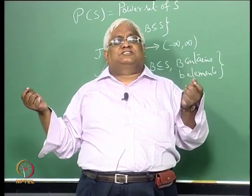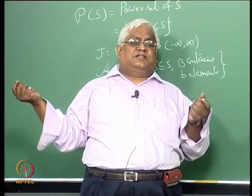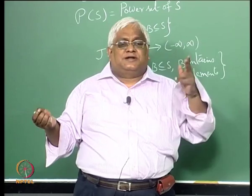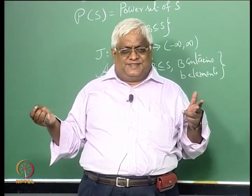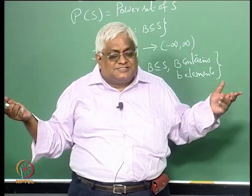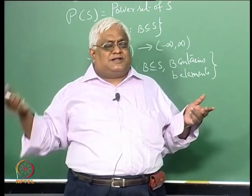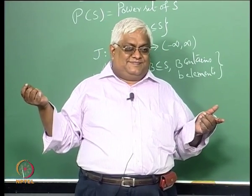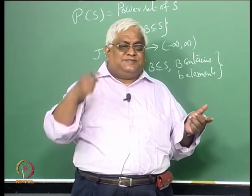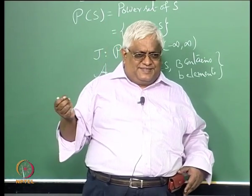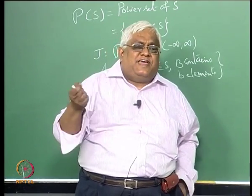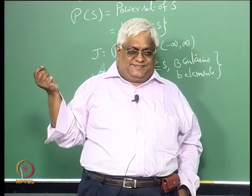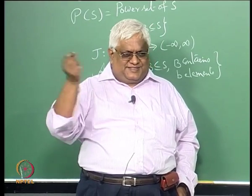Let us say the number of classes is two. Then I might have a decision rule like: x1 + x2 ≤ 1 put it in class 1, greater than 1 put it in class 2. The number of decision rules is infinite, and for each decision rule you have a probability of misclassification. Among all these decision rules, which one provides the minimum? That value is what I am looking at for just those two features.